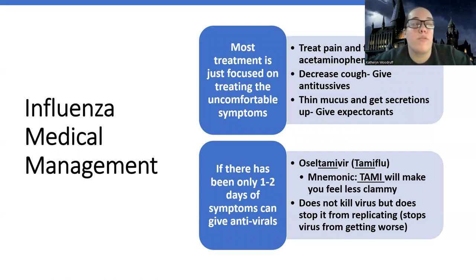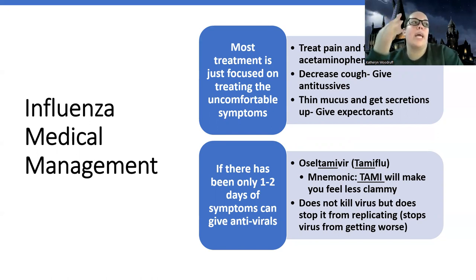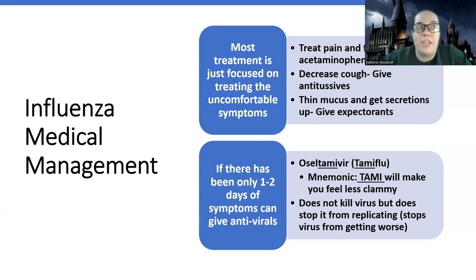Most treatment is just focused on managing uncomfortable symptoms. We can give acetaminophen for pain and fever — same as we discussed with sinusitis. We can use expectorants like guaifenesin or Mucinex to help thin mucus and get secretions up. We can also give antitussives to decrease coughing. The thing about decreasing cough is that we want patients to cough stuff up if there's infection — we want to get it out. But sometimes patients are having such a hard time with their cough that it's keeping them up at night and they need rest. So there are times, if it's really affecting their ability to sleep and get better, we will give antitussives for comfort, but we don't want to rely too much on them.